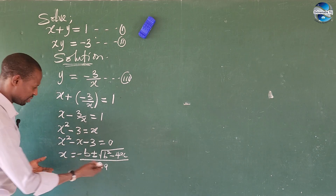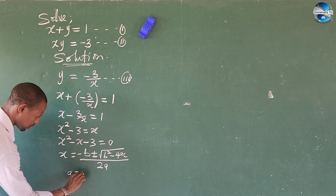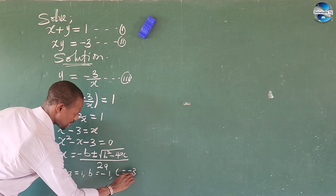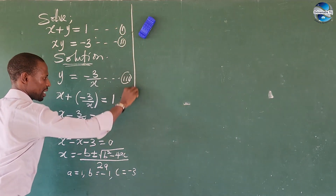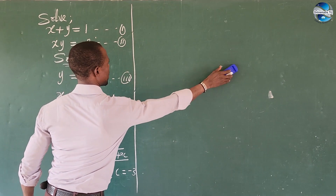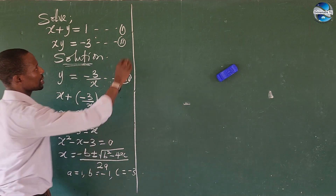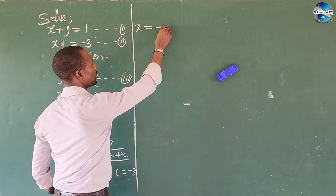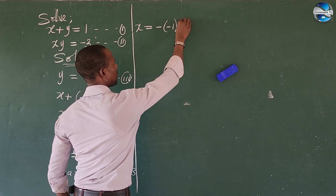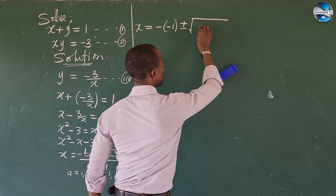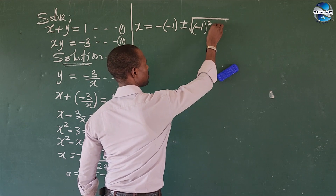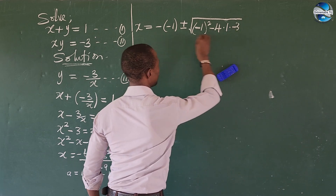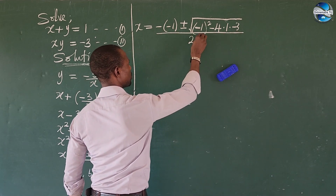So let's bring the values: a equals positive 1, b equals minus 1, and c equals minus 3. Substituting these into the formula, x equals minus bracket minus 1, plus or minus the square root of minus 1 all to the power of 2, minus 4 times 1 times minus 3, everything all over 2 times 1.